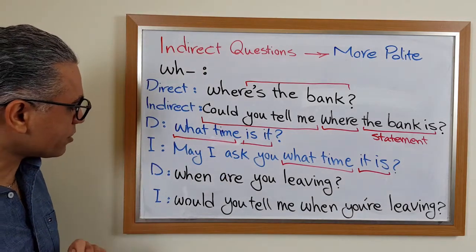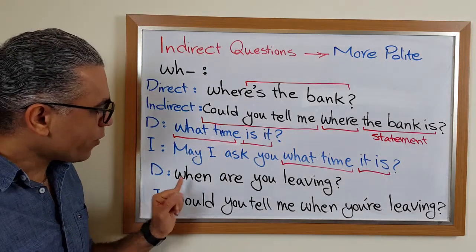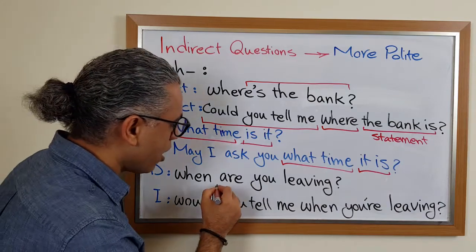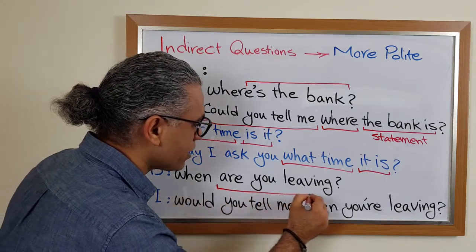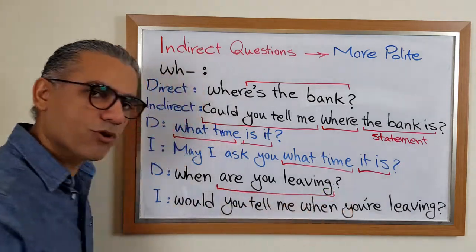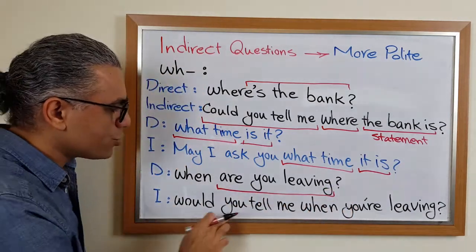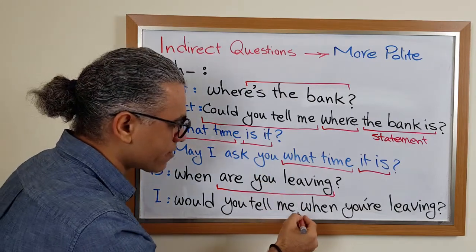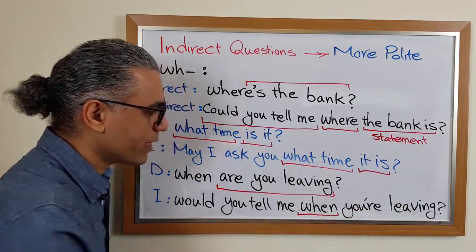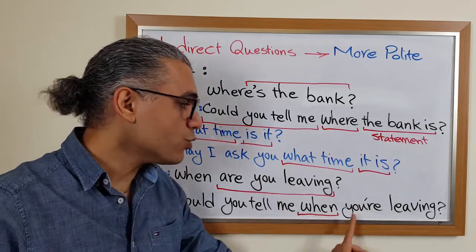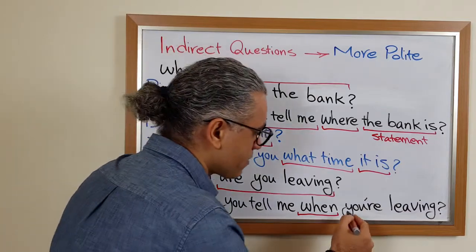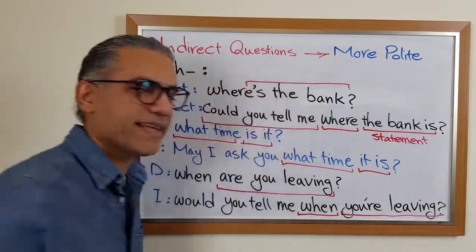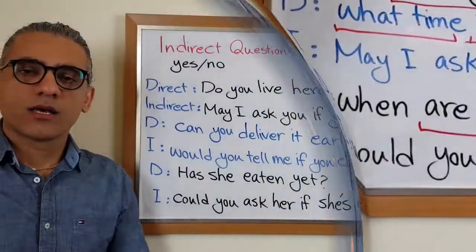Another example: 'When are you leaving?' — that's the structure of a question. 'Would you tell me when you are leaving?' — same WH word 'when,' and then the structure of a statement.